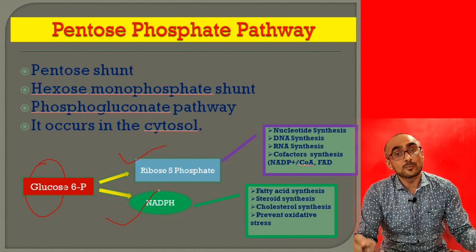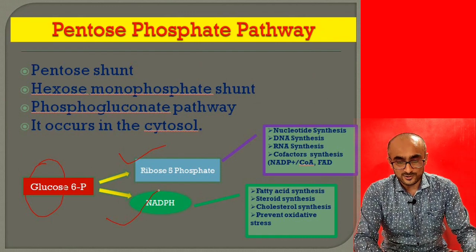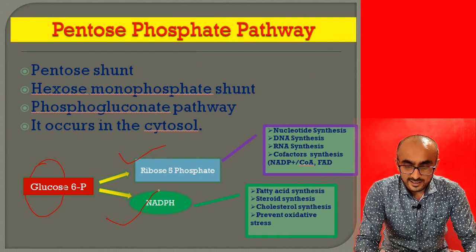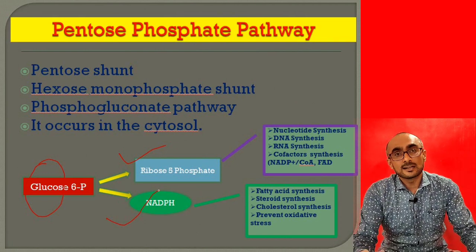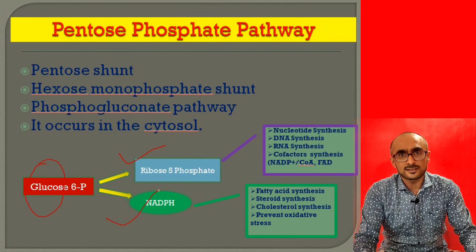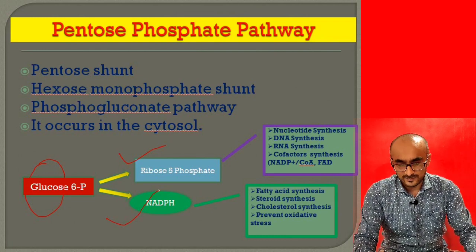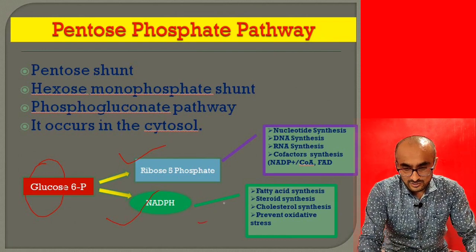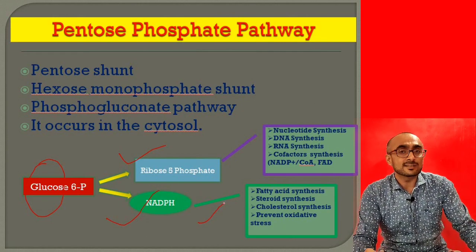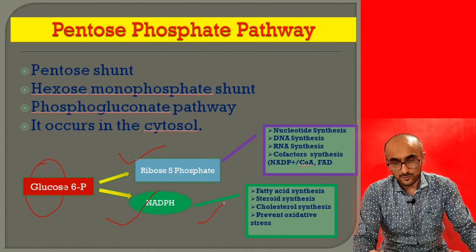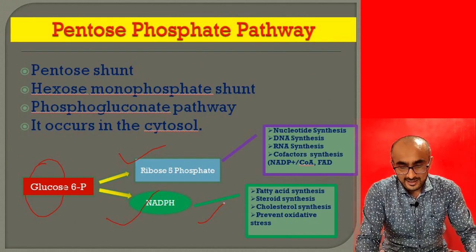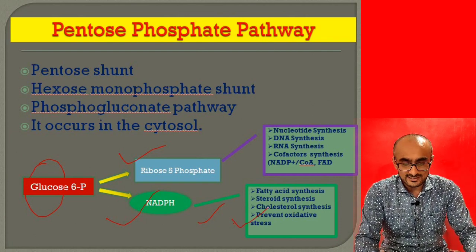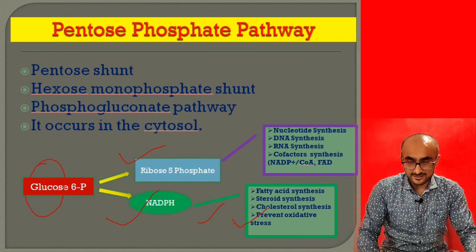Ribose-5-phosphate is used in the synthesis of nucleotides like DNA, RNA, and several cofactors where nucleotides are involved. NADPH is used for reductive biosynthetic reactions such as fatty acid synthesis, steroid synthesis, and cholesterol synthesis. Additionally, NADPH also helps in preventing oxidative stress, which will be discussed in later slides.